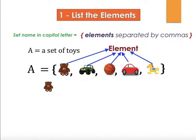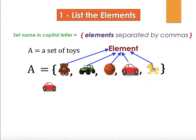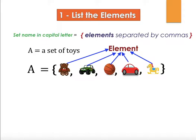When we look at each element, for example a teddy bear, we say it belongs to set A. The symbol for that is the epsilon, the E-like symbol, and we say it belongs to A. Similarly, the red toy car also belongs to set A using the epsilon symbol. Now if we look at an element that doesn't belong to set A — for example letter D — we use the epsilon symbol with a slash across it and say it does not belong to the set.